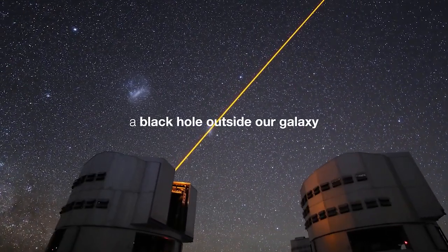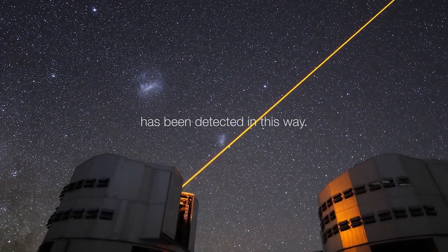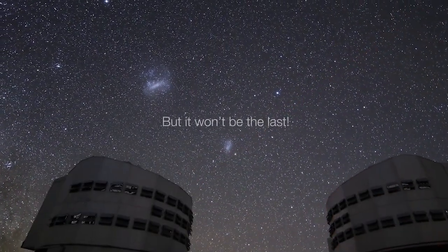The smoking gun that put astronomers on the trail of this black hole was its gravitational influence on the five-solar-mass star orbiting it.